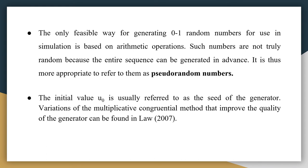The only feasible way for generating 0 and 1 — that is, random numbers for use in simulation — is based on arithmetic operations. Such numbers are not truly random because the entire sequence can be generated in advance. It is more appropriate to refer to them as pseudo-random numbers. The initial value u0 is usually referred to as the seed of the generator. Variations of the multiplicative congruential method which improve the quality of the generator were found in 2007.